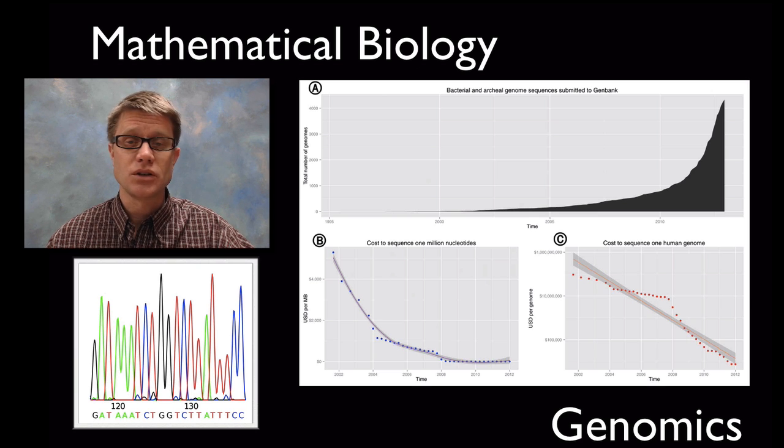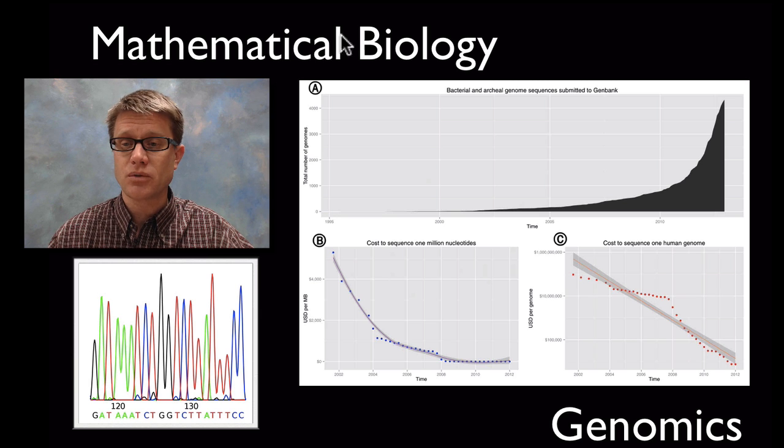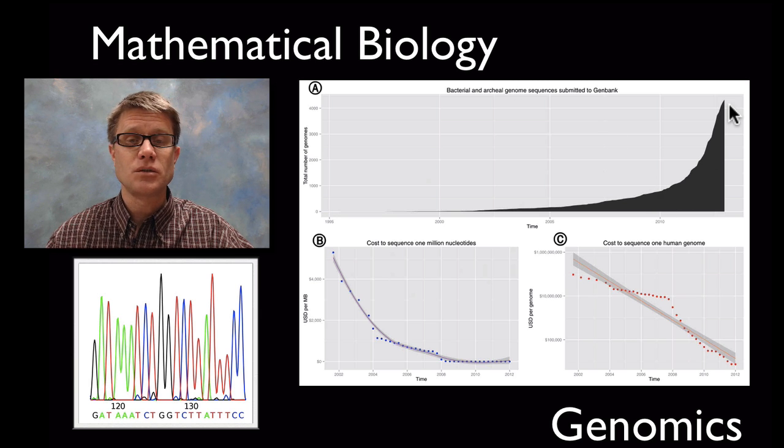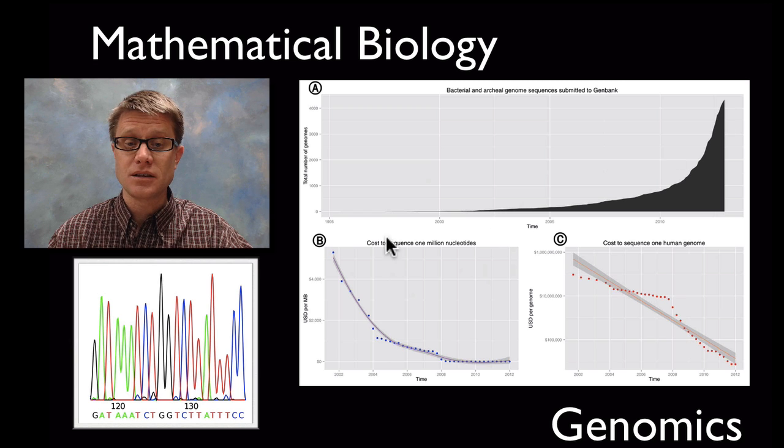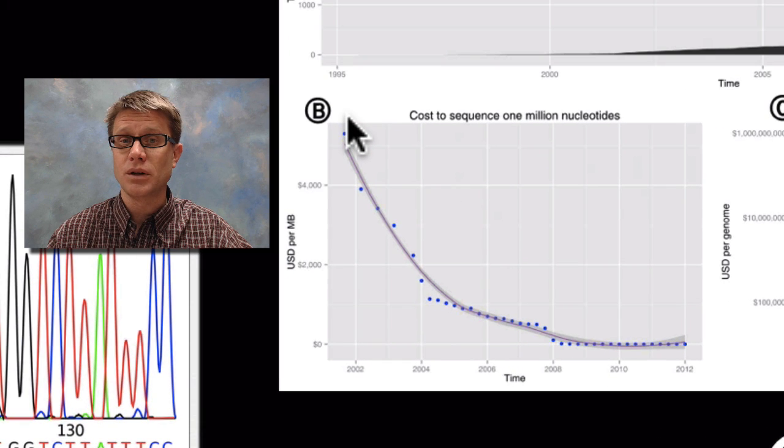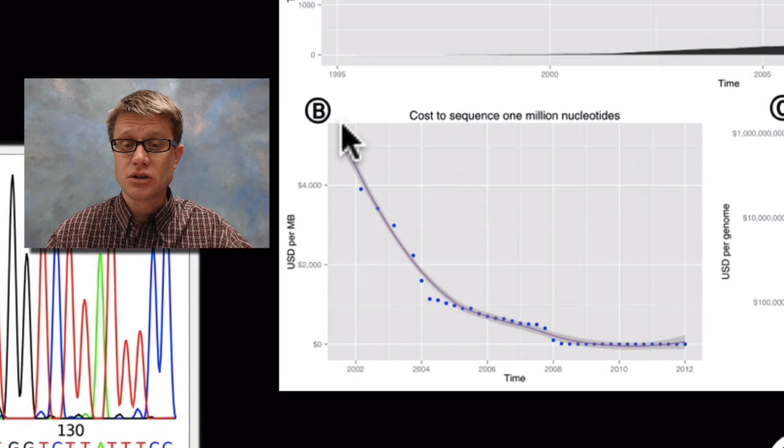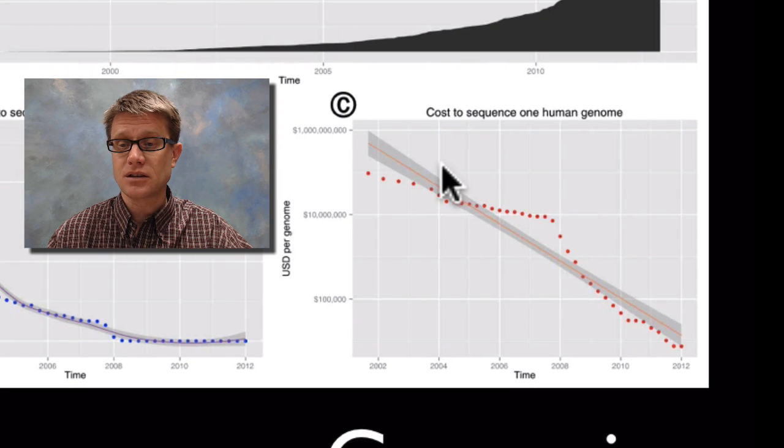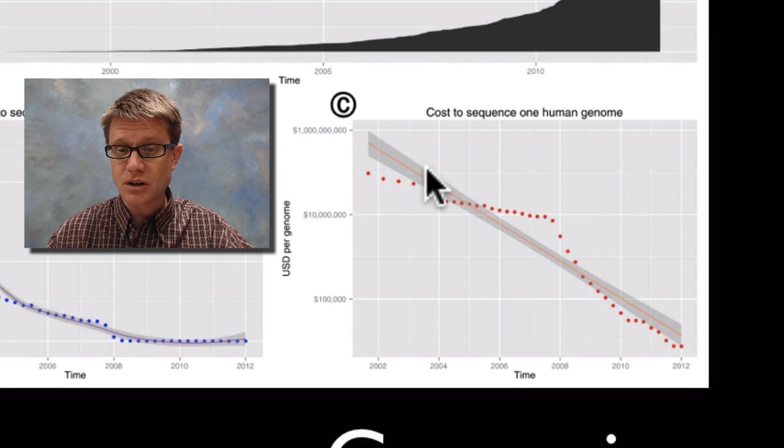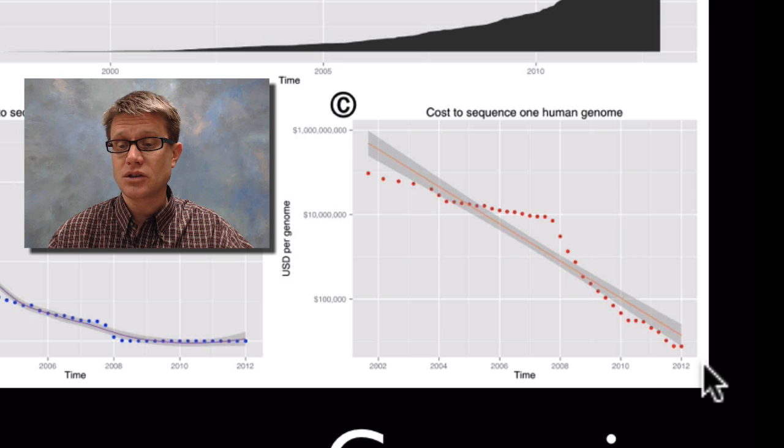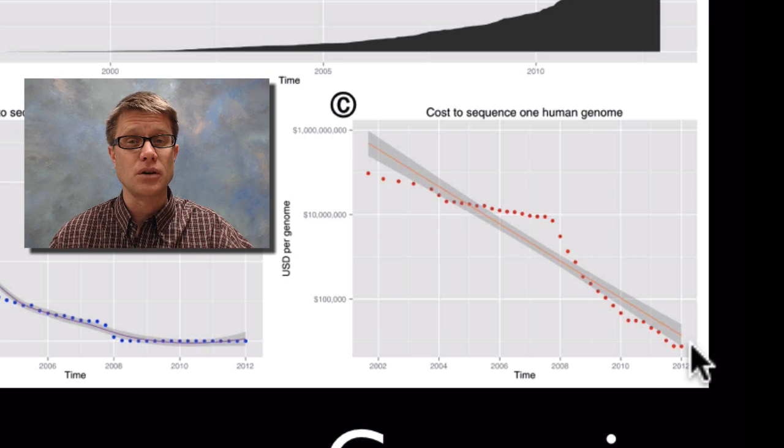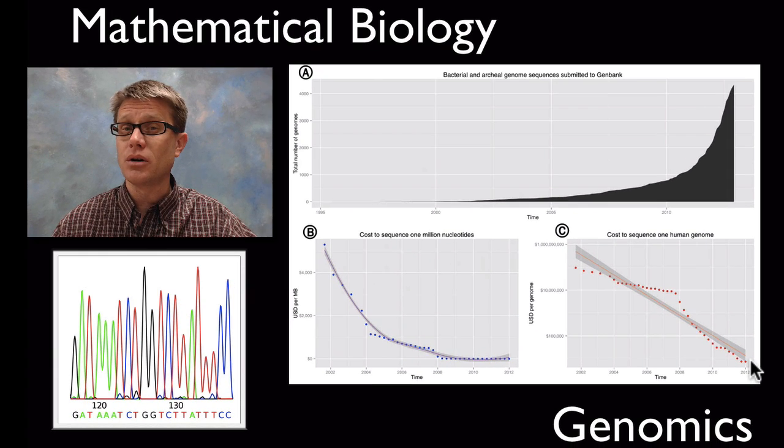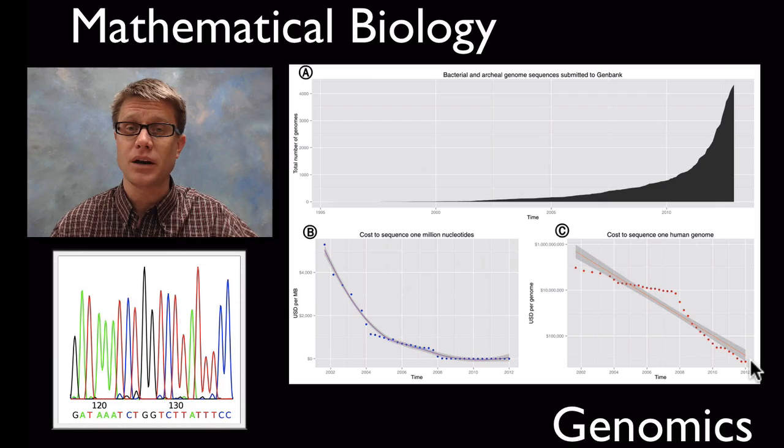One of those is genomics. We're sequencing so much DNA right now and it's getting cheaper and cheaper. This shows the exponential growth in genes being submitted to the gene bank. This is the cost to sequence one million nucleotides which is approaching zero. This is the cost to sequence a human genome which started in the millions but is getting cheaper every day. In the future you'll probably be able to have your own genome sequenced even in a biology class.